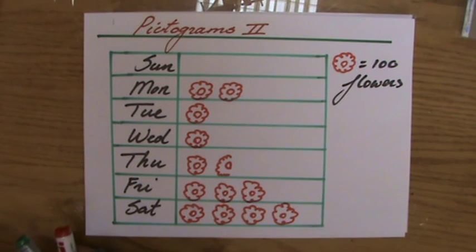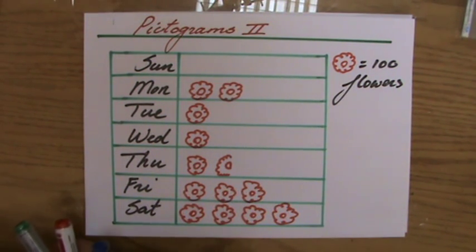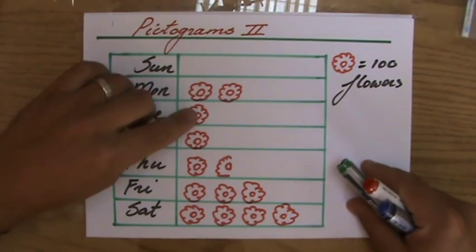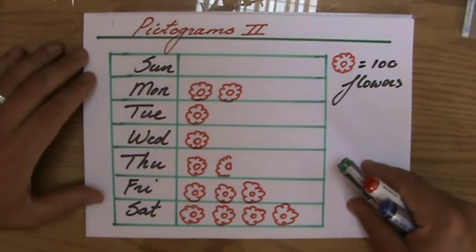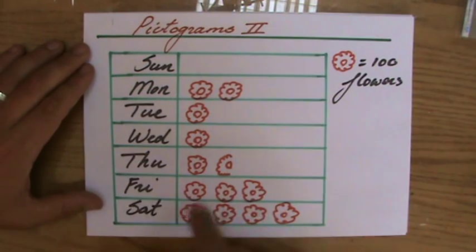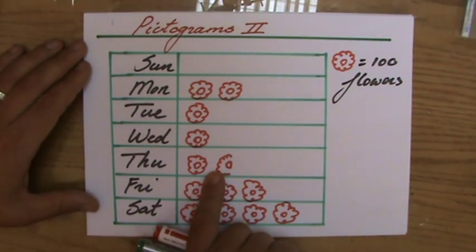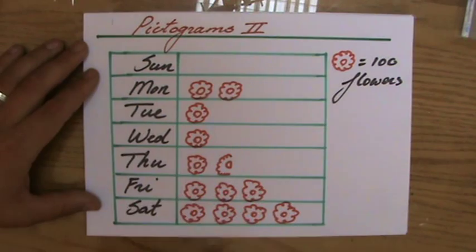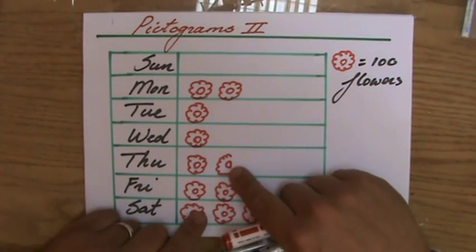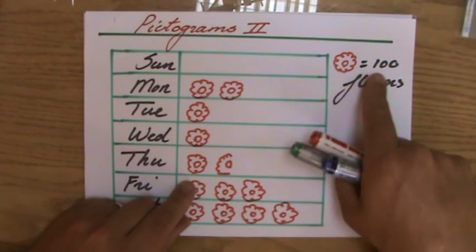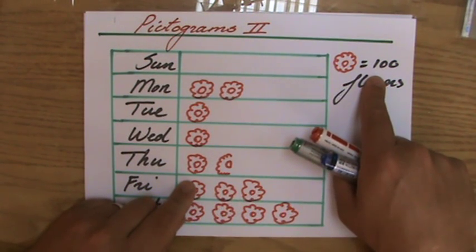They could also ask: on which two days did the flower seller sell an equal amount of flowers? The answer is Tuesday and Wednesday. And what about Thursday? On Thursday there is one full flower picture and one half picture — so one and a half flowers — meaning 150 flowers were sold on Thursday.